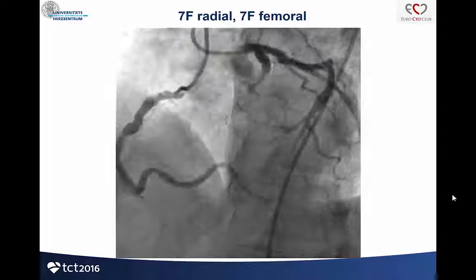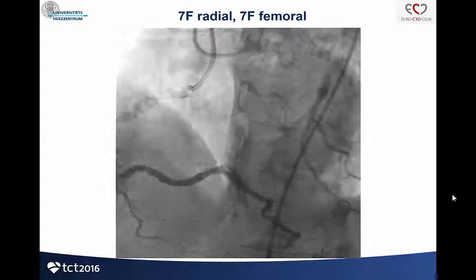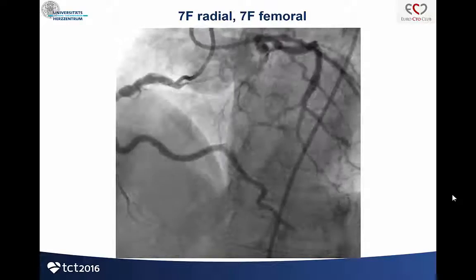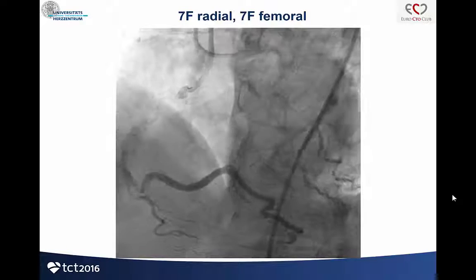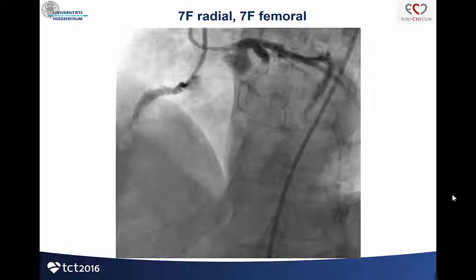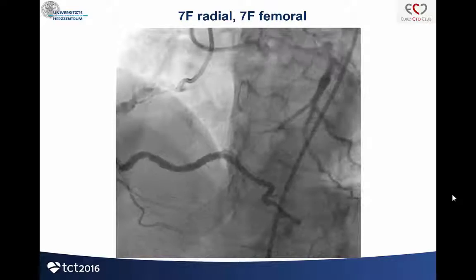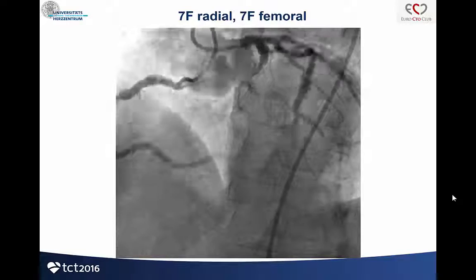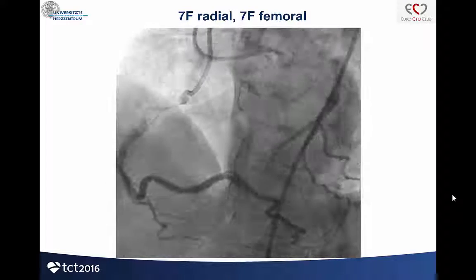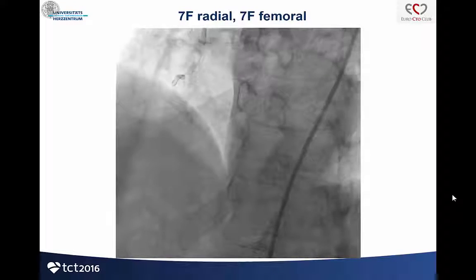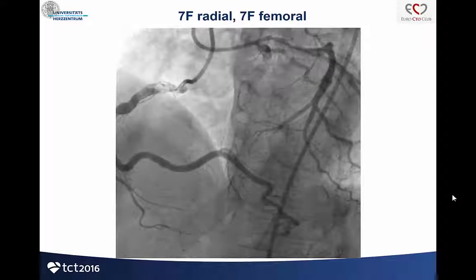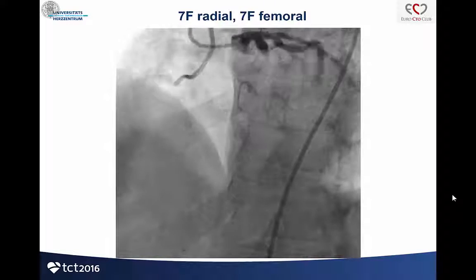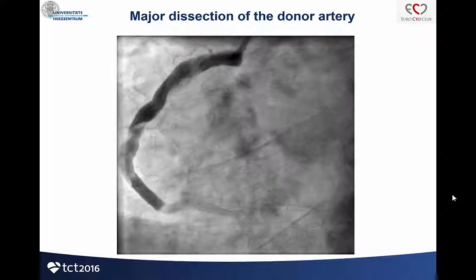Here you can see the first image. I had an AL1 on the right coronary artery and an XP 3.5 on the left. The target vessel was the LAD, which we could see nicely here. I used one radial and one femoral approach. I was not so happy with how the AL1 engaged, and I had staining on the proximal part, so I decided to change to a normal GR catheter.